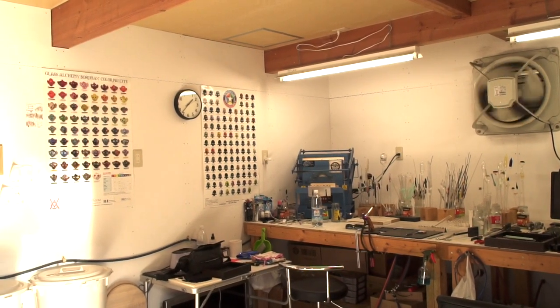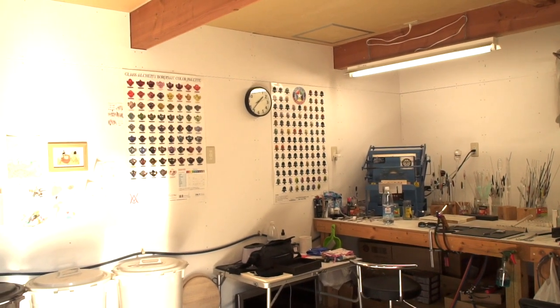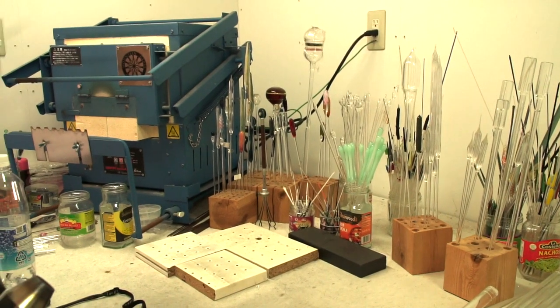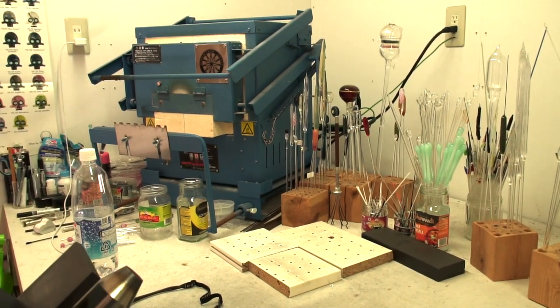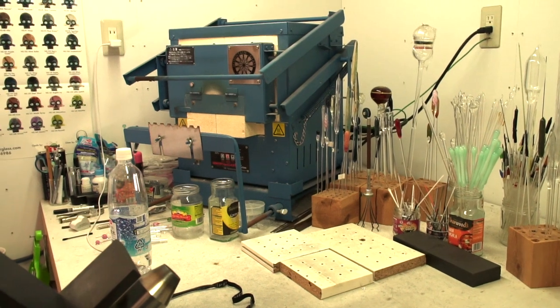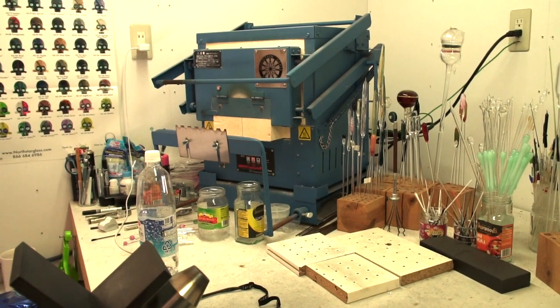After he finishes a pen, he puts it in the kiln at 1050 degrees Fahrenheit or 565 degrees Celsius for one hour to anneal it. It kind of crystallizes it and makes it stronger.